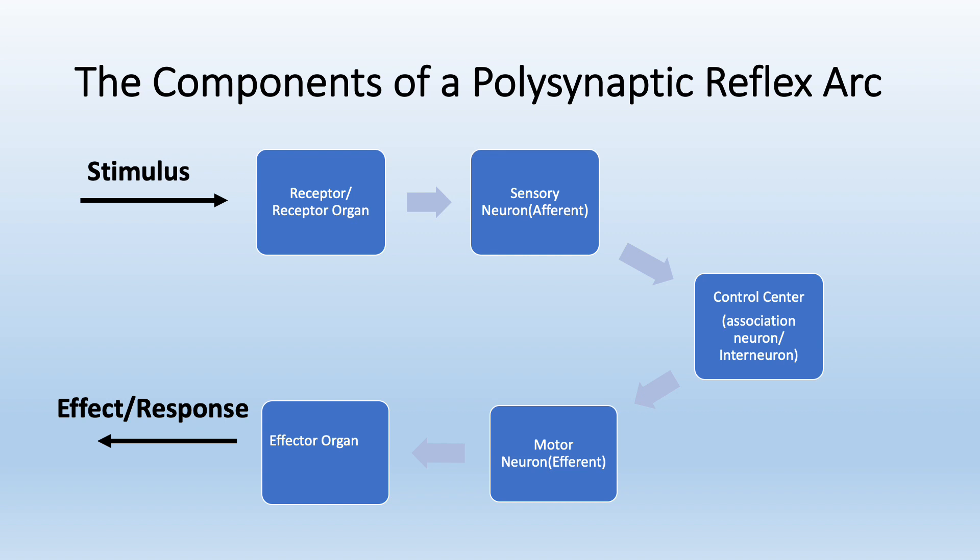Without a stimulus there is no reflex, so you need to have a stimulus and be able to receive it. The first step in the reflex arc is a receptor, receptor organ, or sensory organ. After the message is received, it has to travel to the central nervous system, and this is done by the sensory neuron or afferent neuron. The spinal cord is the control center, and in the spinal cord we have an interneuron, also called an intermediary neuron or association neuron. This neuron transmits information from the sensory neuron to the motor neuron. The motor neuron, also called the efferent neuron, brings the order to the related effector organ, which gives the response.